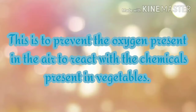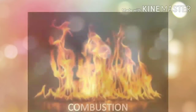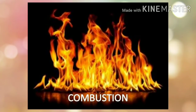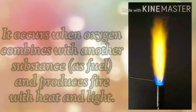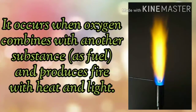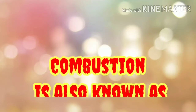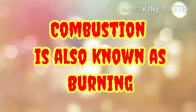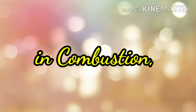This is to prevent the oxygen present in the air from reacting with the chemicals present in the vegetables. Another example of a change in materials when oxygen is present is combustion. It occurs when oxygen combines with another substance as fuel and produces fire with heat and light. Combustion is also known as burning. It is always exothermic — that is, giving off heat.